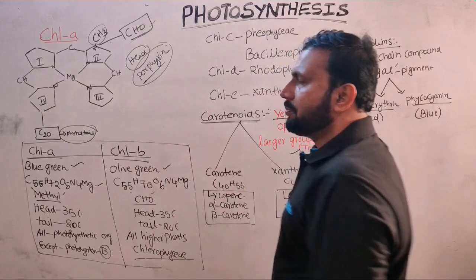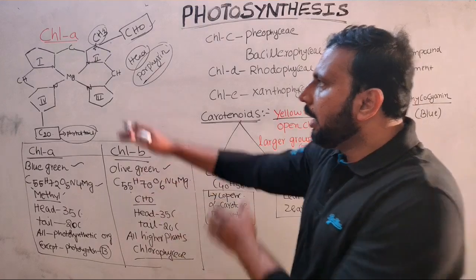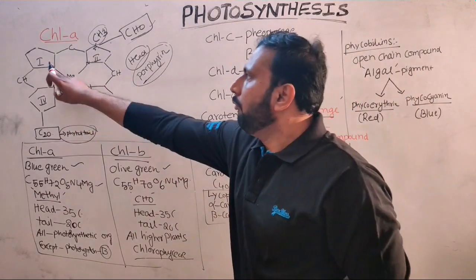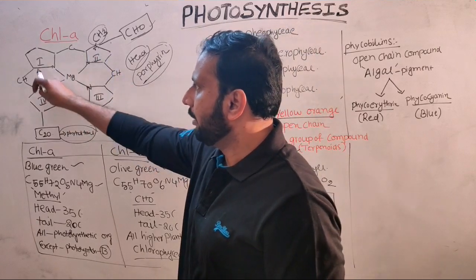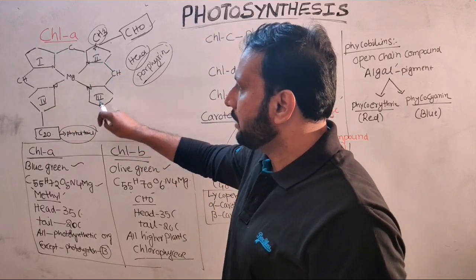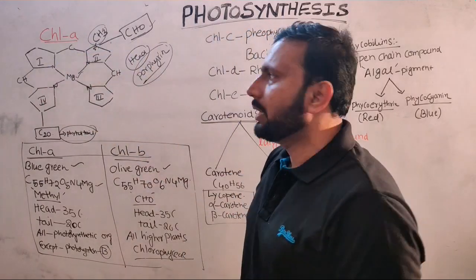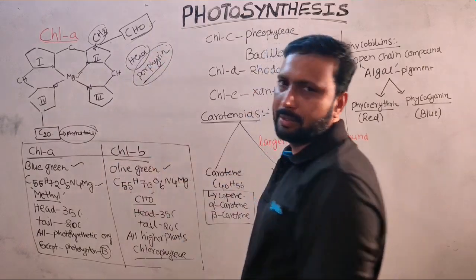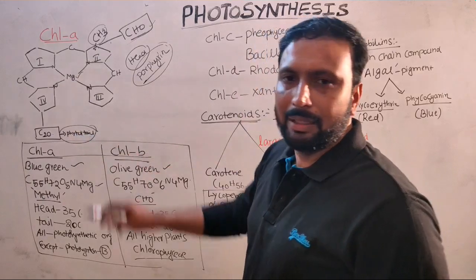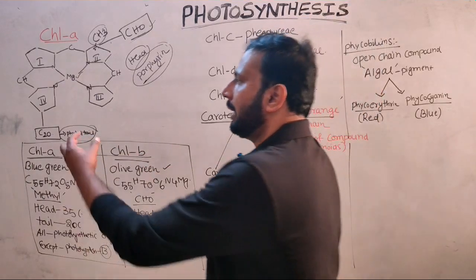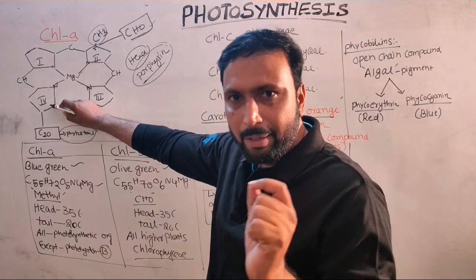When you observe the chlorophyll structure, two parts are present: a head part and a tail part. The head is mainly made up of four pyrrole rings arranged in a cyclic manner, with a magnesium atom at the center. That head is called the porphyrin head. The tail part is a 20-carbon phytol tail, esterified with the fourth pyrrole ring.